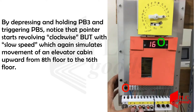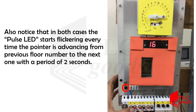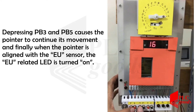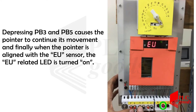The pointer continues revolving clockwise from the eighth floor to the sixteenth floor. Notice that in both cases, the pulse LED starts flickering every time the pointer advances from the previous floor number to the next one with a period of two seconds. Depressing PB3 and PB5 causes the pointer to continue its movement.